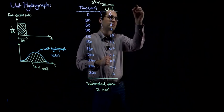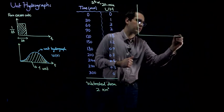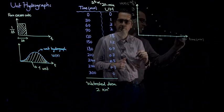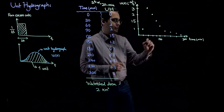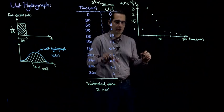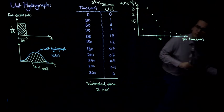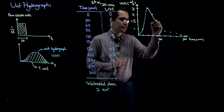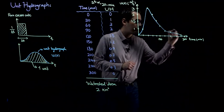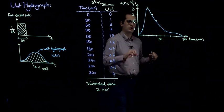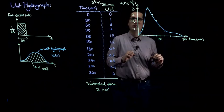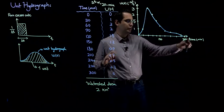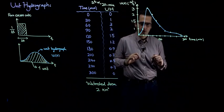I'm going to draw a unit hydrograph. These are the points representing the unit hydrograph — I'm going to connect them to each other. This is the unit hydrograph given to me. Notice that the units for flow are cubic meters per second, and the unit for time is minutes.